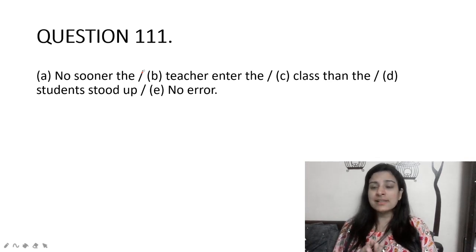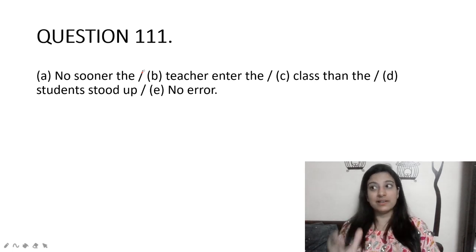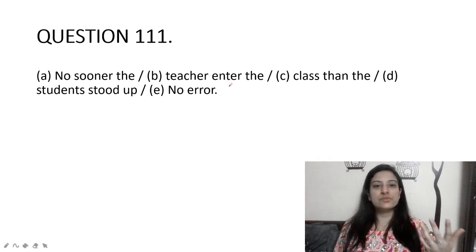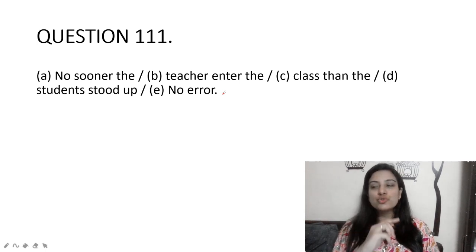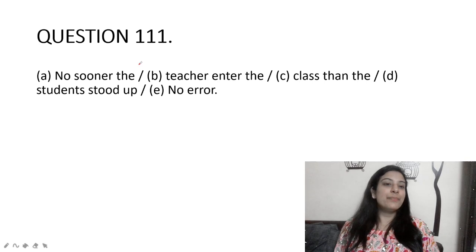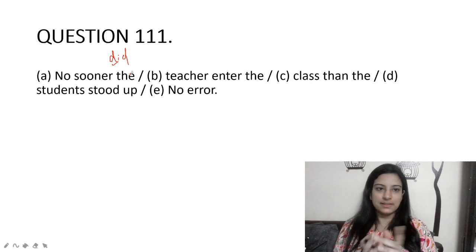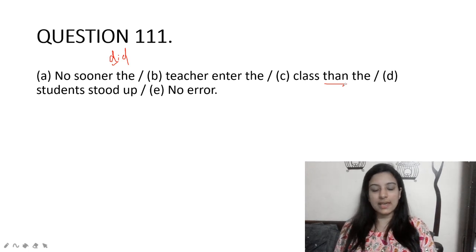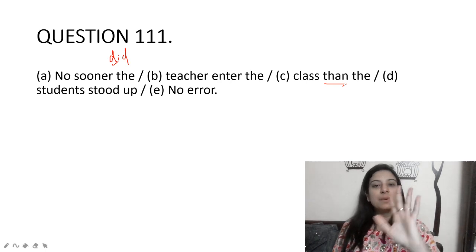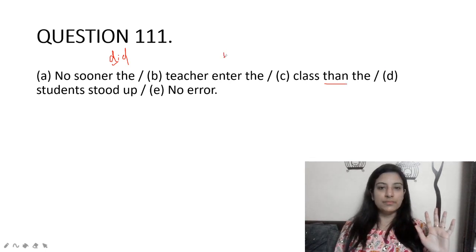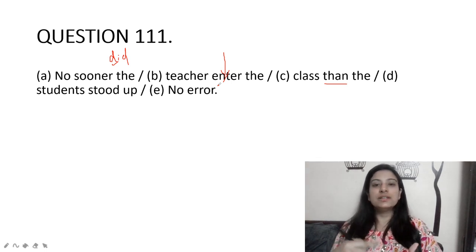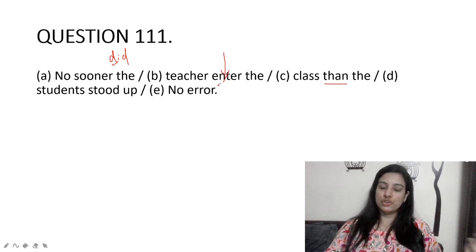No sooner teacher entered the class than the students stood up. With 'no sooner,' you must invert the subject and helping verb. You haven't provided a helping verb here — you must add one. Also, 'no sooner' always pairs with 'than,' which is correct here. The right form is: 'No sooner did the teacher enter the class than the students stood up.' With 'did,' you use the V1 base form 'enter.'